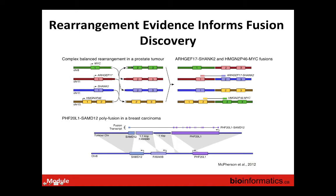An earlier figure on chromoplexy is revisited here to show how whole genome sequencing provides additional information when analyzing fusions. In this complex event, four loci were broken, permuted, and rejoined, producing four gene fusions — two of which involve genes with known oncogenic function, putatively affecting the biology of that cancer. This is an interesting example of a double hit, where one event simultaneously creates two gene fusions.